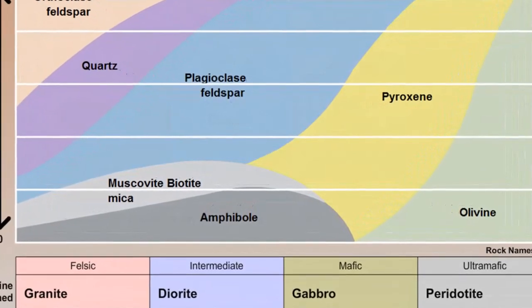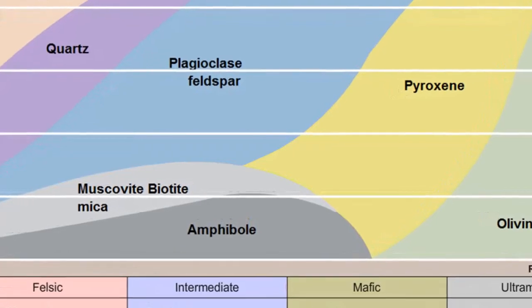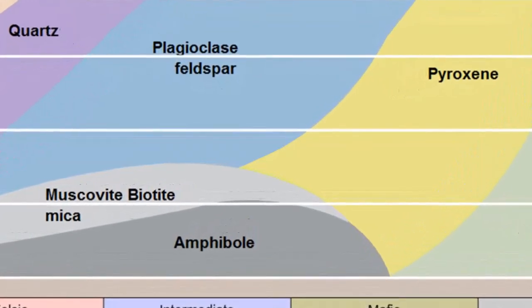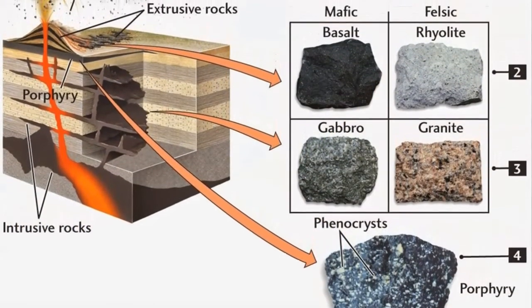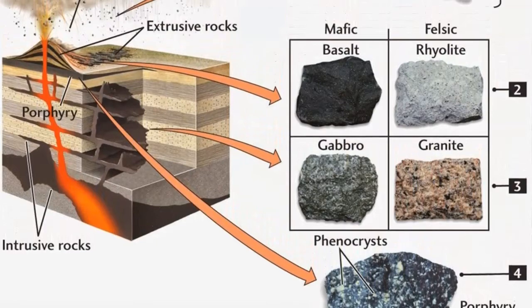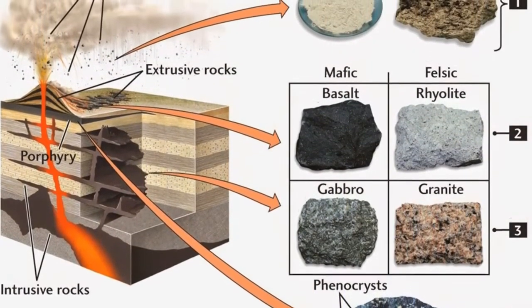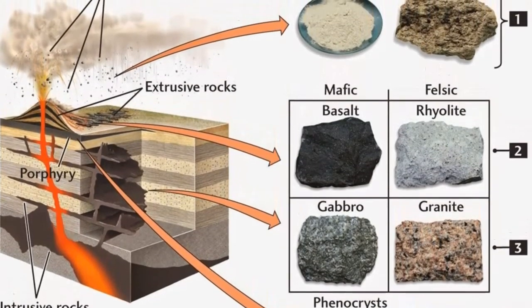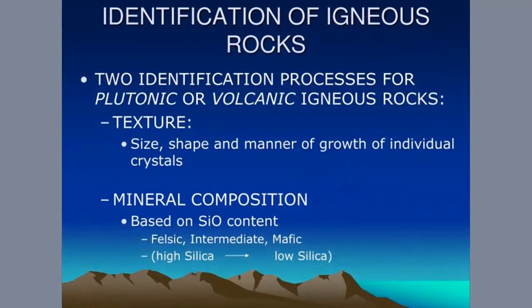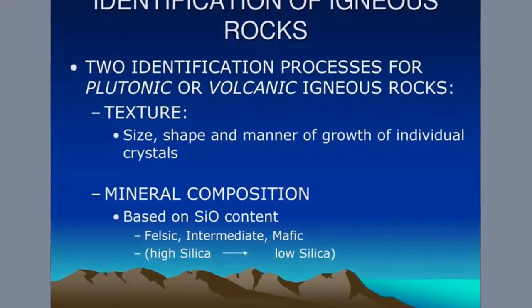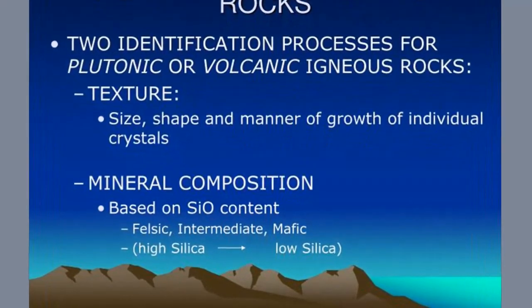Although the crystallization of magma is complex, it is nevertheless possible to classify igneous rocks based on their mineral composition and the conditions under which they formed. Their environment during crystallization can be roughly inferred from the size and arrangement of the mineral grains, a property called texture. Consequently, igneous rocks are most often classified by their texture and mineral composition.